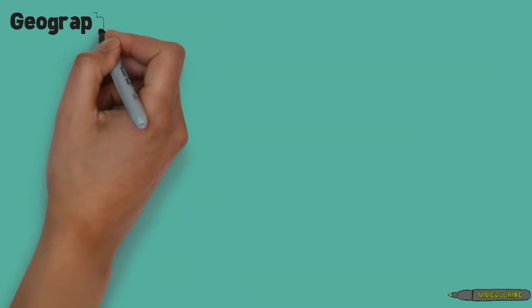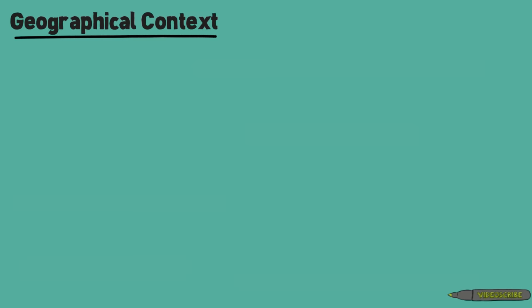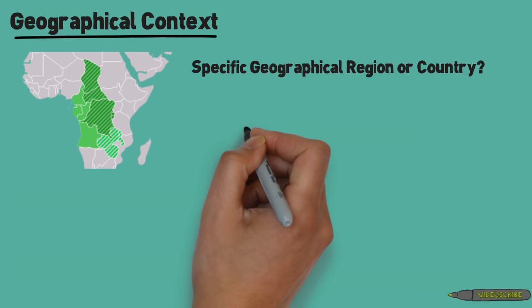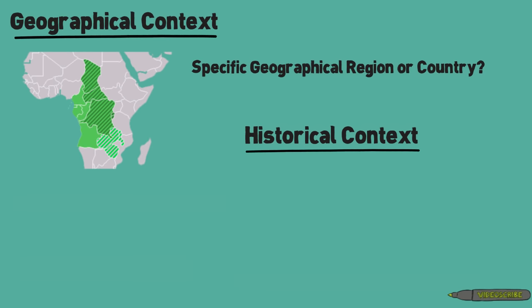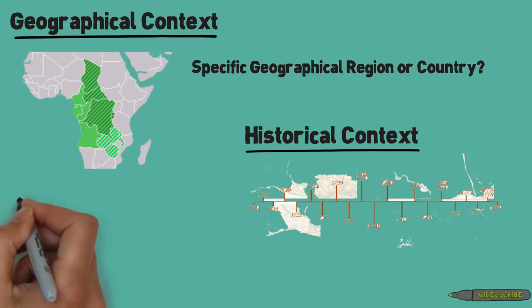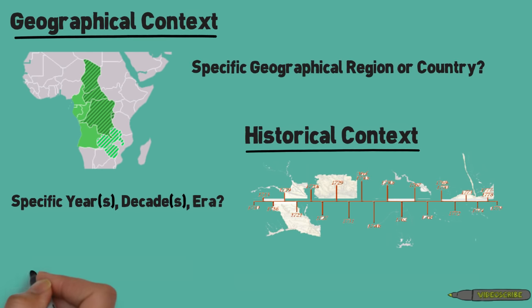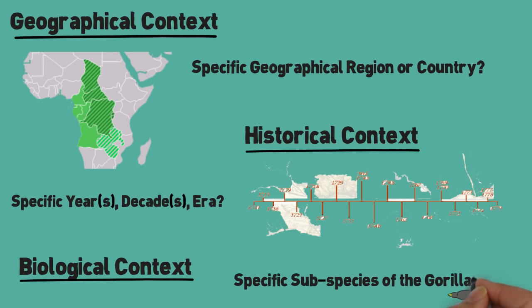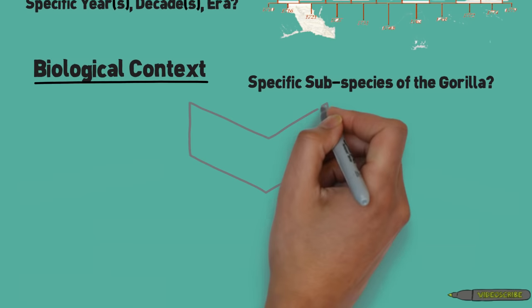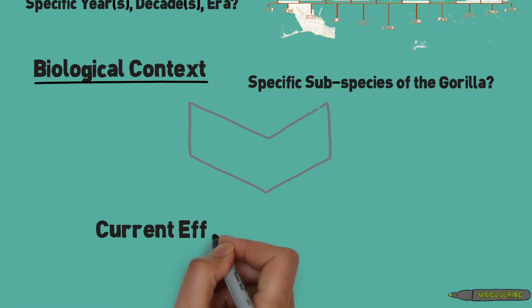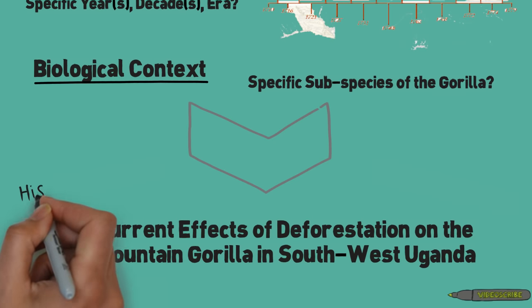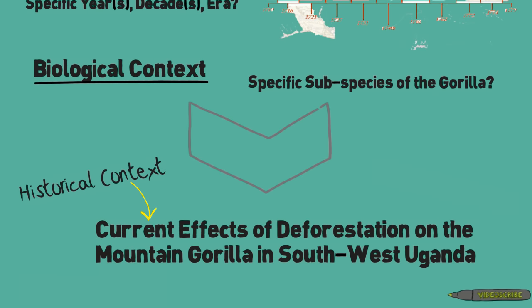For example, you could add some geographical context to your paper. Is there a geographic region or country in which gorillas are specifically affected by deforestation? Perhaps you want to focus more on a historical context — is there a certain time aspect you want to write about, perhaps the time when deforestation really started to affect gorillas? And third, you could also add biological context. Perhaps there's a specific subspecies of gorilla that you're interested in writing about. When we combine all three contexts and incorporate them into the original topic, we get something like: current effects of deforestation on the mountain gorilla in southwest Uganda — incorporating the historical, biological, and geographical context.